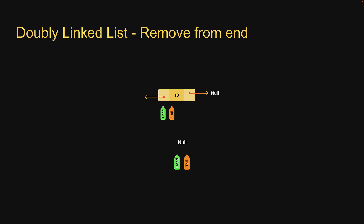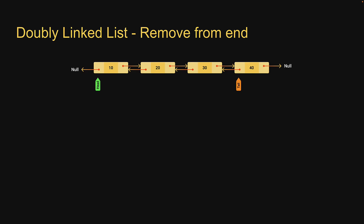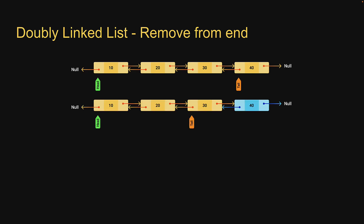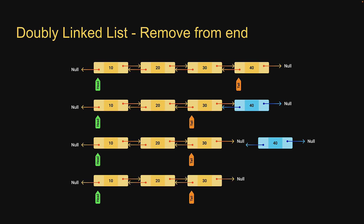On the other hand, to remove a node from the end of the list, we have two scenarios. If the list contains only one node, both head and tail of the list should be pointed to null — this will effectively remove the node from the list. If the list contains more than one node, you get hold of the node previous to the tail using tail.previous. You then update the new tail pointer's next field to null.